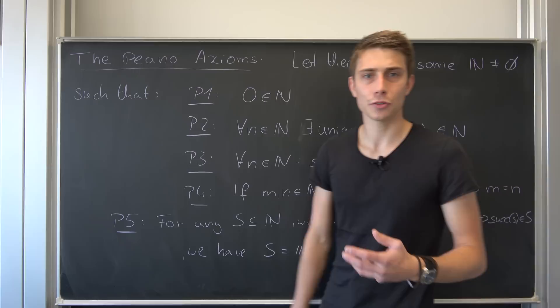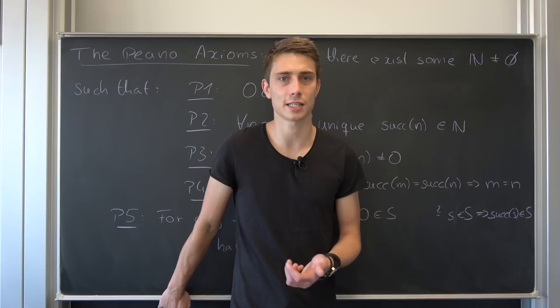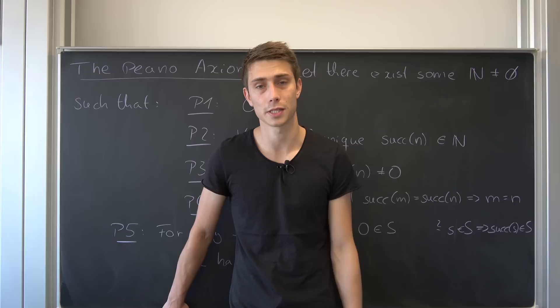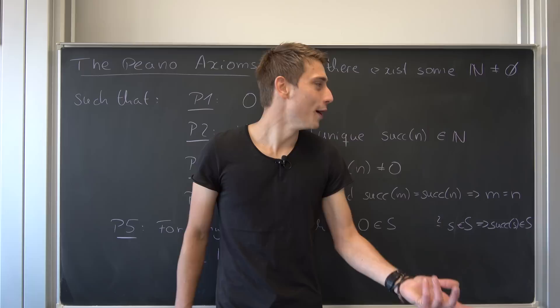So we want this to be an element of natural numbers, thus making this set non-empty by definition. Okay, and also we want for all N element of natural numbers that there exists some unique successor of this very number N. What's the successor? Well, the successor of one is just two, the successor of 1562 is just 1563. There was a stupid example. Why did I choose such a big number?